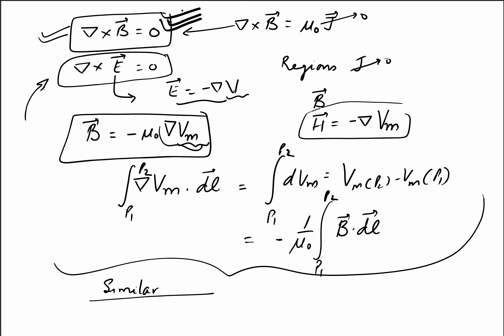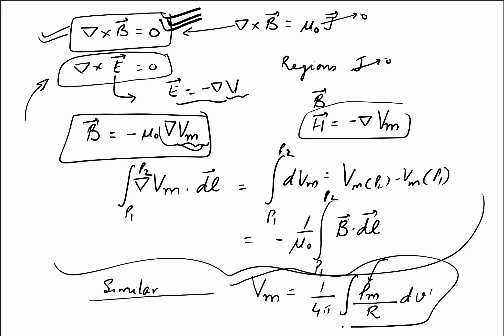When the curl of B is zero, we can utilize a scalar magnetic potential. Similar to the electric potential, this is given by one over 4 pi times the integral of the magnetic charge density rho_m. Of course there are no magnetic charges in real life, but since we are taking a hypothetical equivalent case, we can calculate the magnetic scalar potential from this hypothetical magnetic charge density rho_m.